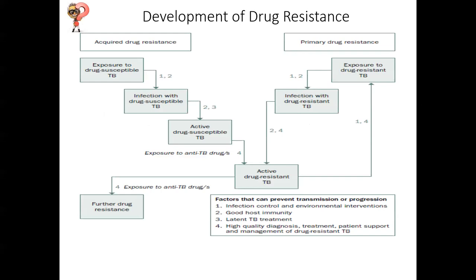This slide will be shared with the team and should be distributed, as we need to know how drug resistance comes about in order to know where to intervene. Along these cascades — both for acquired and primary drug resistance — you can see at the bottom of the slide a box titled 'Factors that can prevent transmission or progression.' As health workers, we need to know how to intervene for a patient with acquired drug resistance — through IPC, looking at host immunity, improving nutrition and other medical care, and improving diabetes care. This chart helps health workers know how to intervene at which particular point.